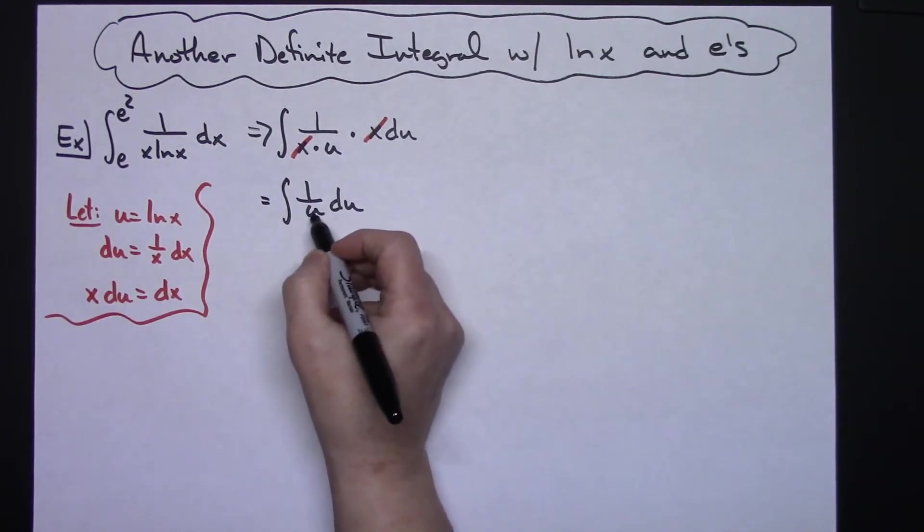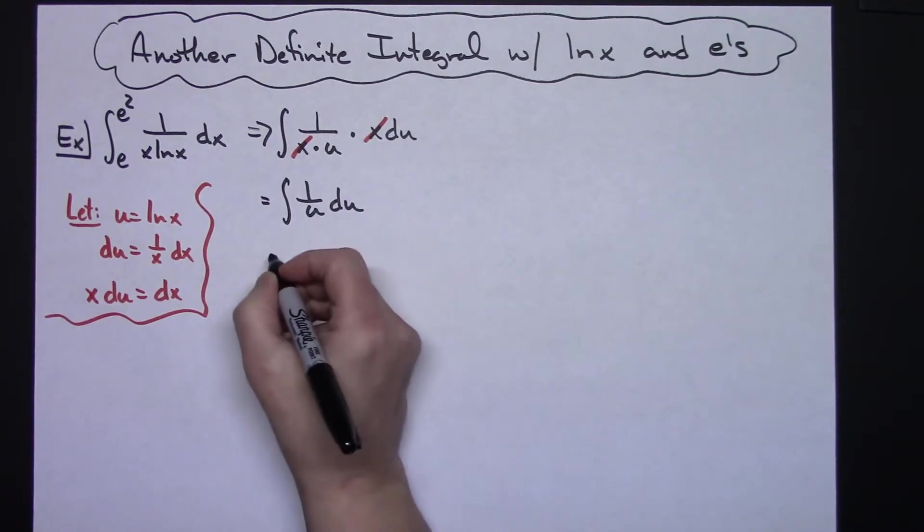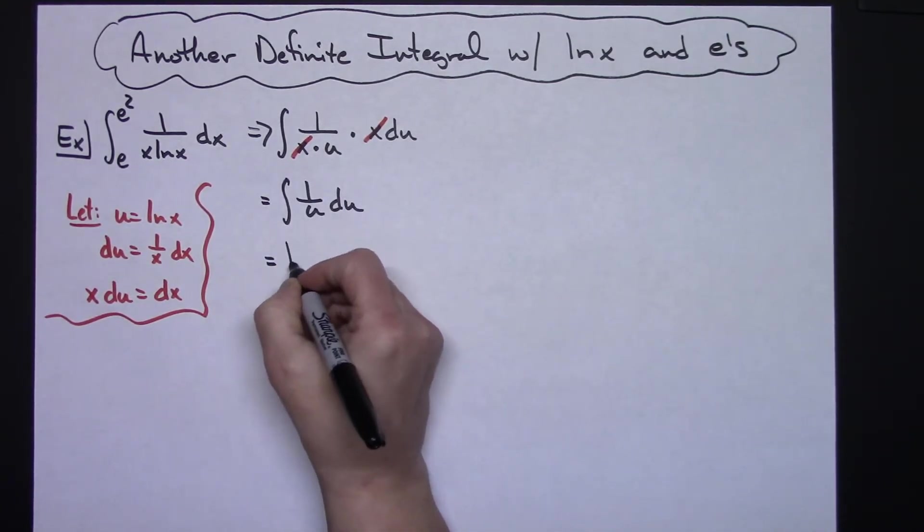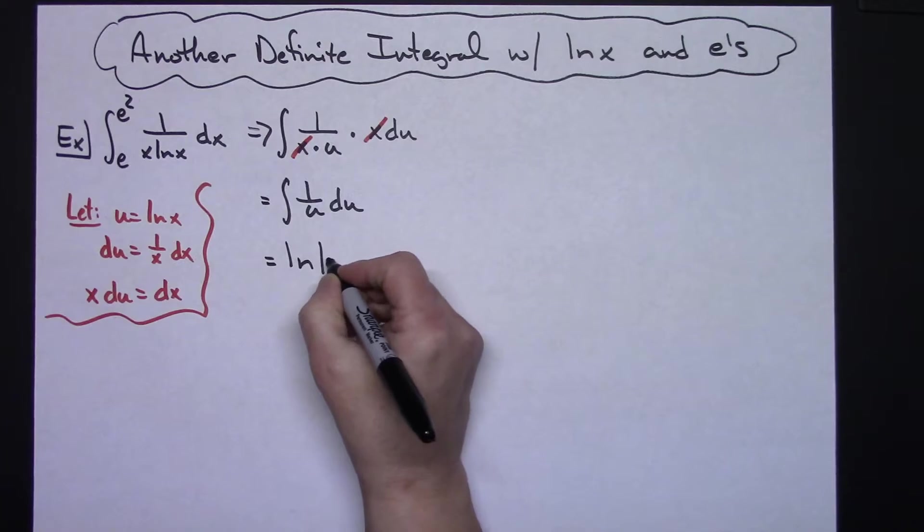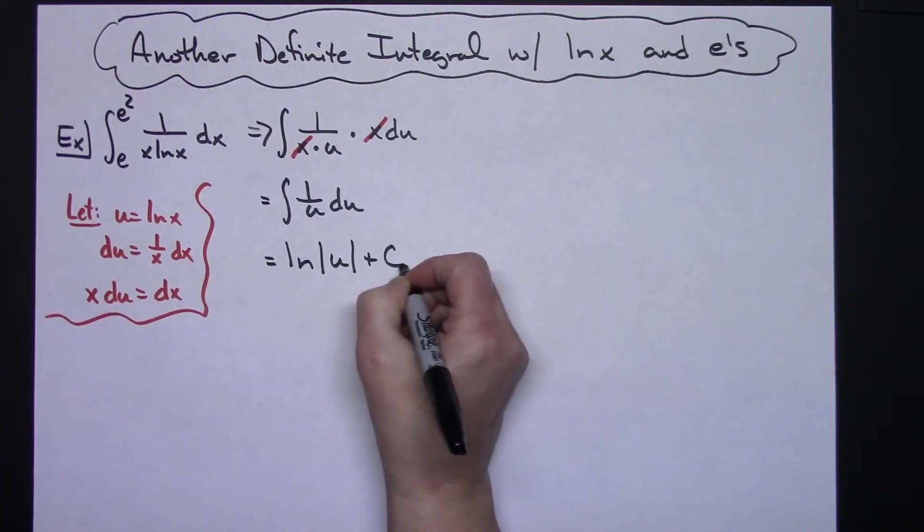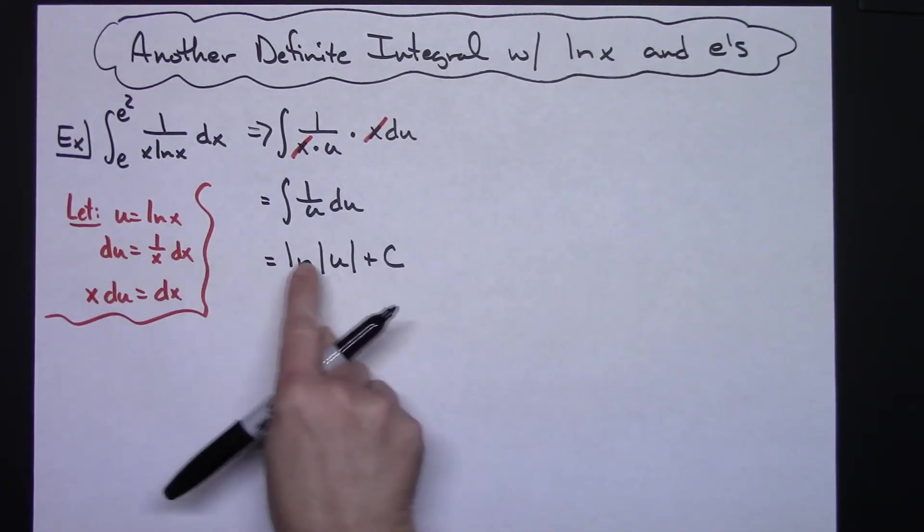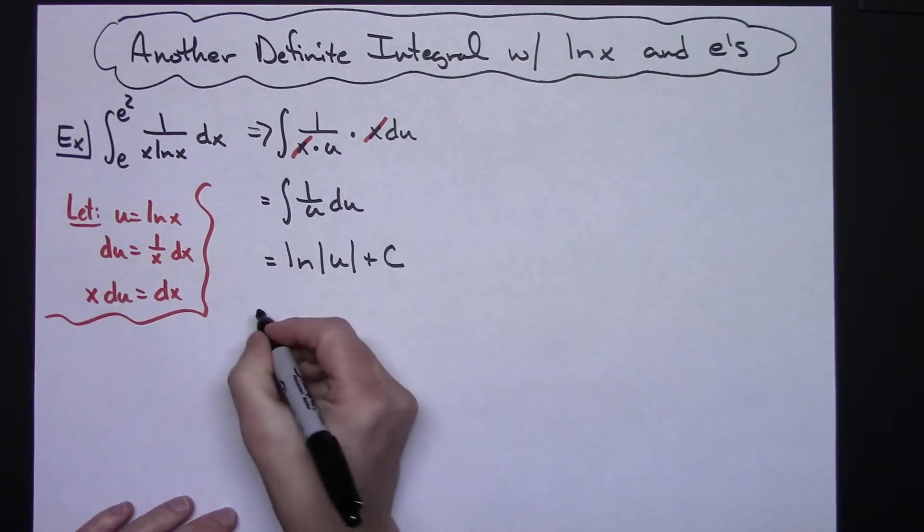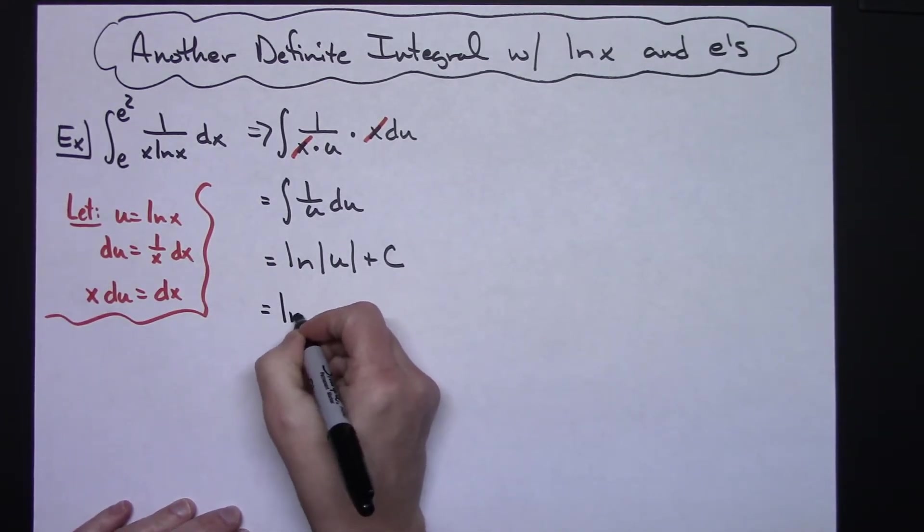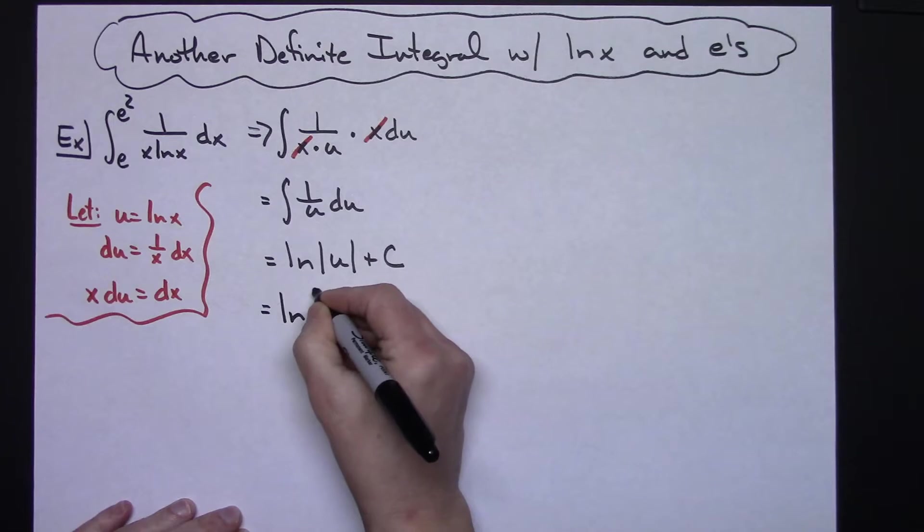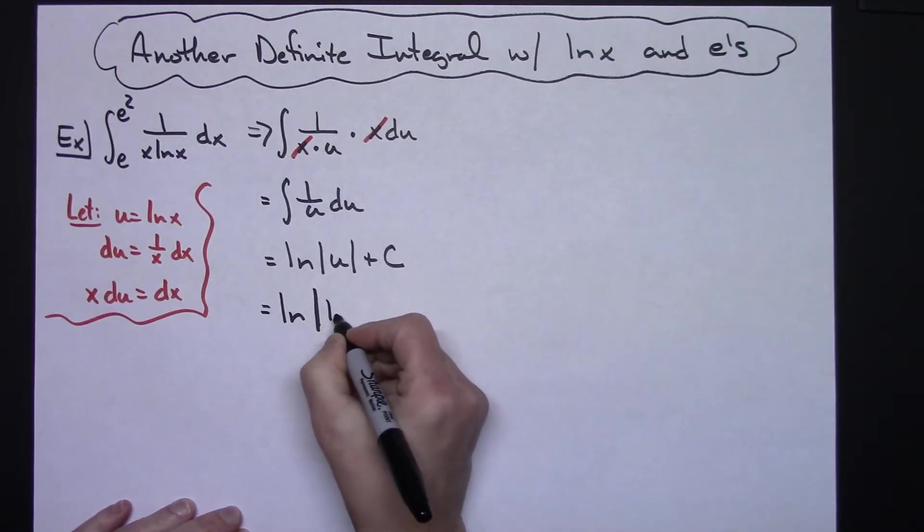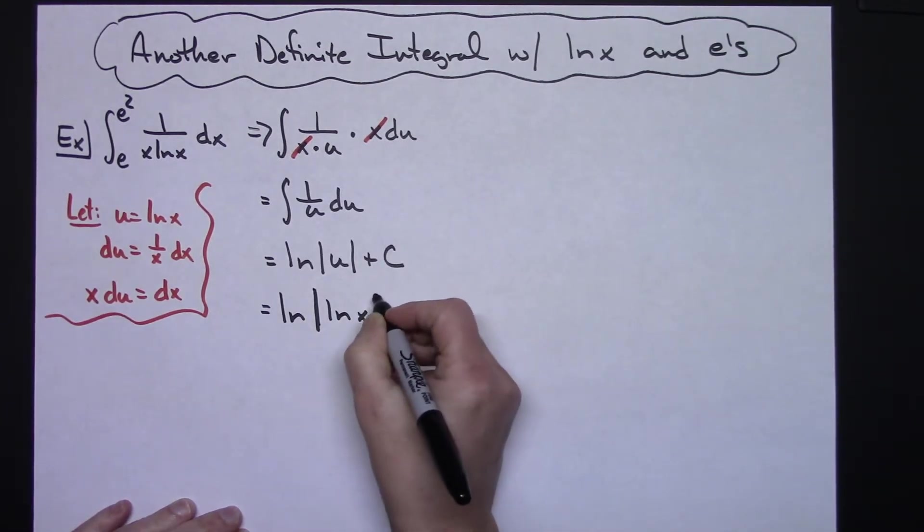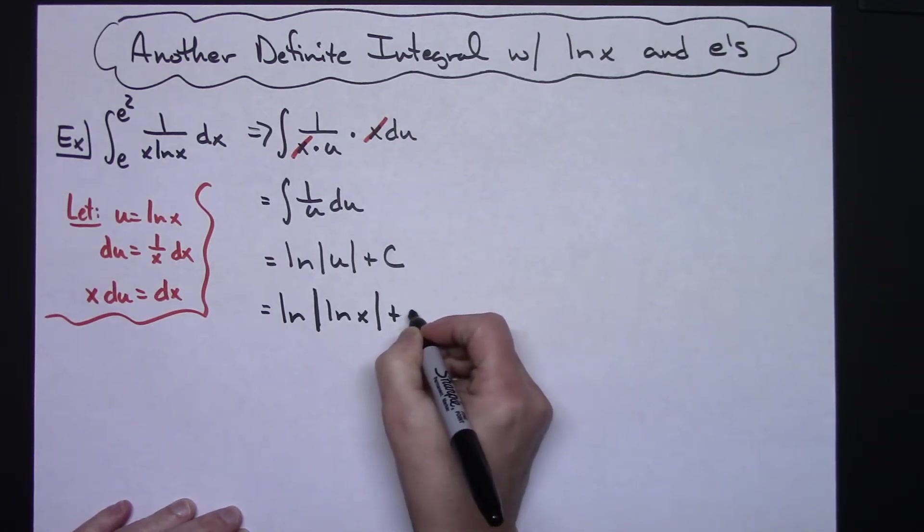When I integrate 1 over u du, hopefully you've got that memorized at this point as being the natural log absolute value of u plus c. Now I can replace my u, so I'm going to have natural log absolute value of natural log of x plus c.